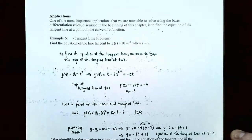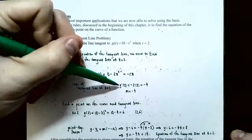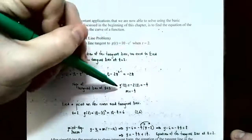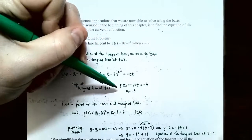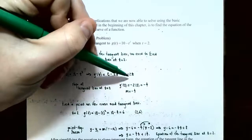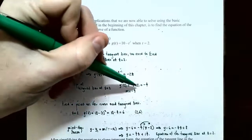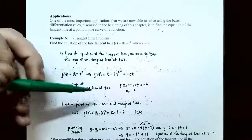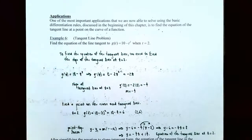Now if we want to find the slope of the tangent line, substitute in t equals 2. So g prime of 2 is negative 2 times 2, which is negative 4. The slope of the tangent line at t equals 2 is negative 4.